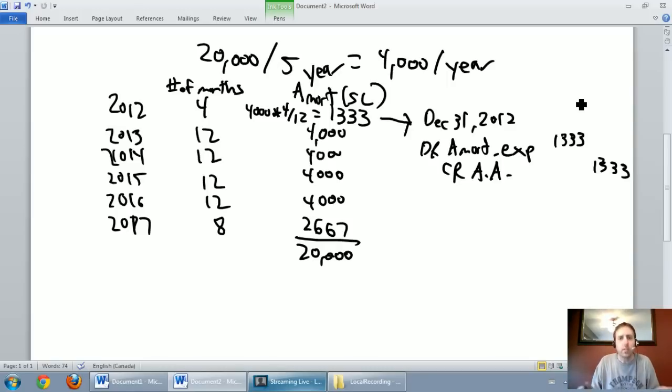As you can see, straight line amortization is very straightforward. The reason it's called straight line is if we have a full year of amortization as we do in 2013, 2014, 2015, and 2016, when we have a full year of amortization it's always the same. If I were to draw on a graph it looks like a straight line. That's why straight line is called straight line amortization. In the next video we'll talk units of production.